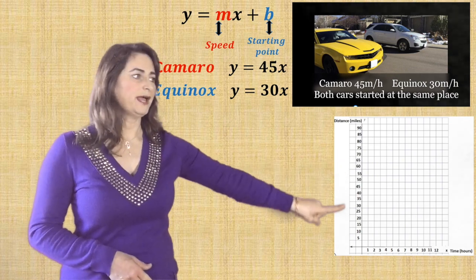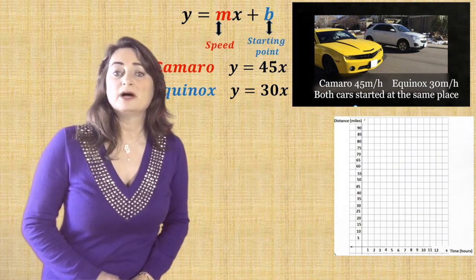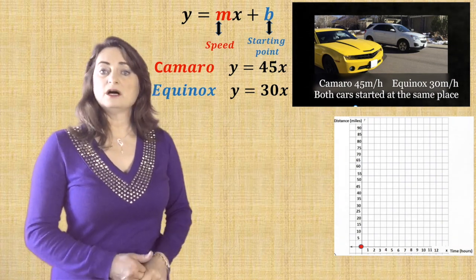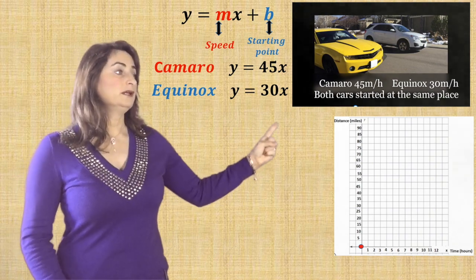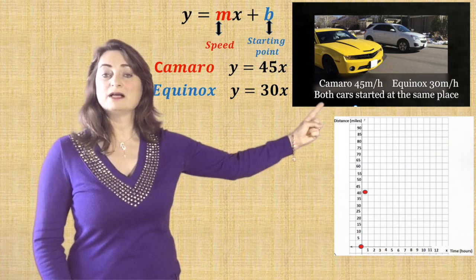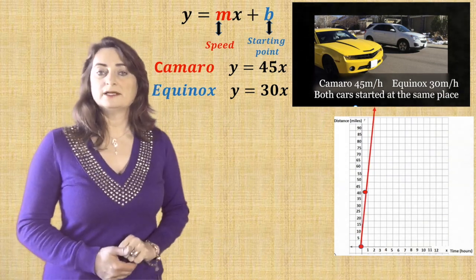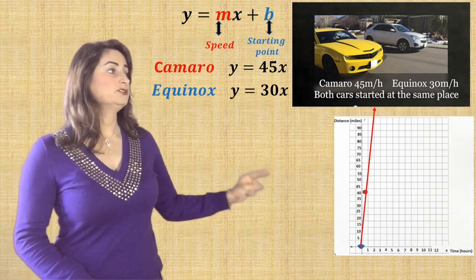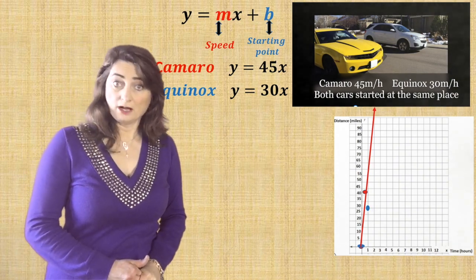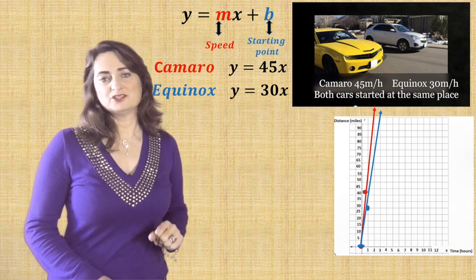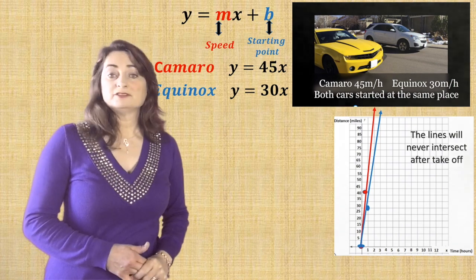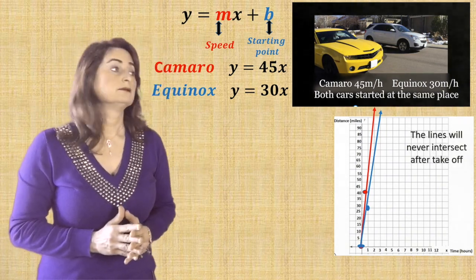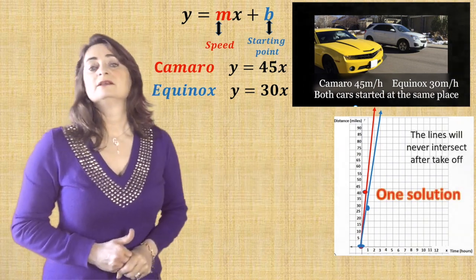To prove this graphically, x represents time in hours and y represents distance in miles. For the Camaro, the red line, start from 0 because b equals 0, and the rate of change is 45 — so go up 45, right 1 — that's 45 miles per hour in one hour. Connect those two dots for the red line. For the Equinox, start from 0 again with the blue dot, and the rate of change is 30 — go up 30, right 1. Connect the line; the blue line is for the Chevy Equinox. The lines will never intersect after takeoff, so after they left, they will never meet. There is one solution, which is (0, 0), the origin.